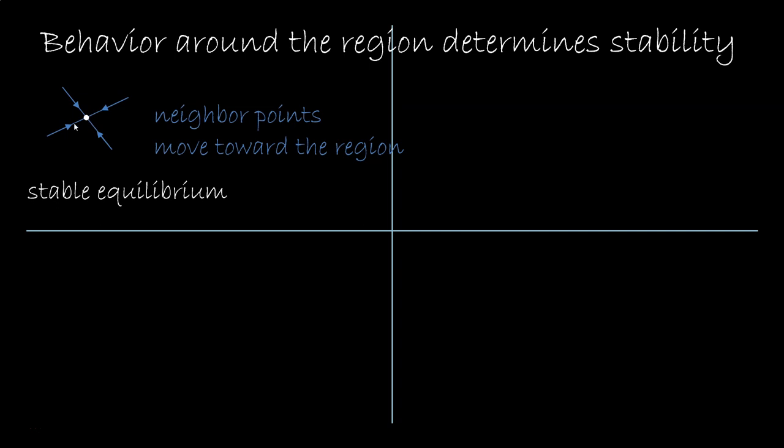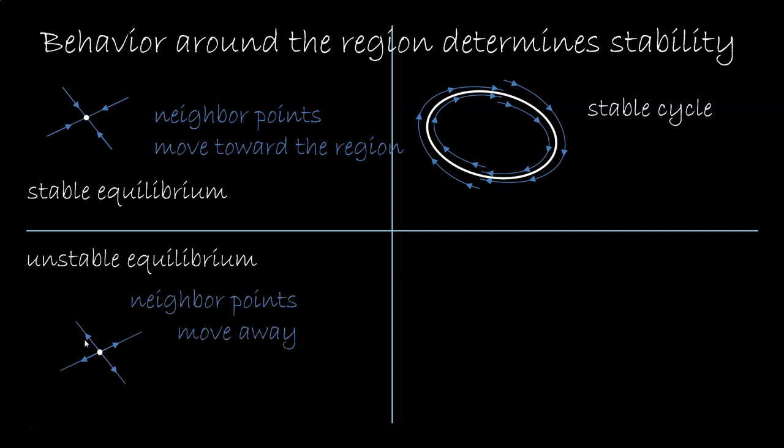So if the stable region is a point, we say we have a stable equilibrium. If it is a cycle, we say we have a stable cycle. Now, if the points around the region move away, we have an unstable region. And you can have an unstable equilibrium, cycle, and so on.